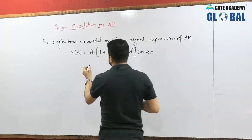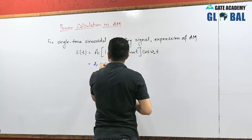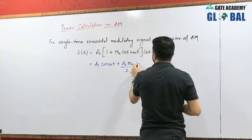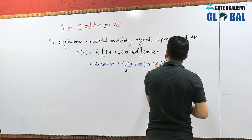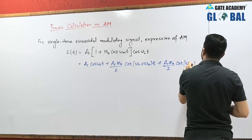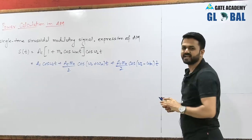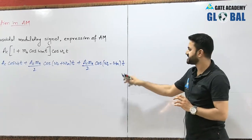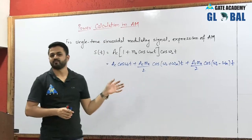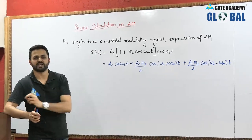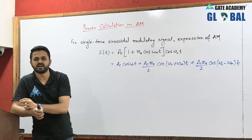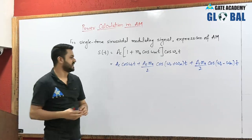If we expand this expression, we get AC·cos(ωc·t) + (AC·MA/2)·cos(ωc + ωm)t + (AC·MA/2)·cos(ωc − ωm)t. This is the expression of AM for single-tone modulating signal. This expression is very important because sometimes in a question the expression is given and we have to compare values to find the carrier amplitude and modulation index.